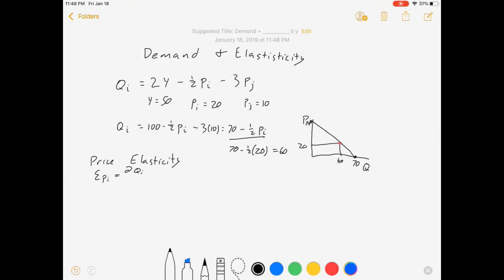Price elasticity, DQI over DPI times PI over QI. Now, don't get freaked out by this notation. There's no calculus in this class. I'm just going to tell you, anytime you see that on a straight line, all you have to do is just take the slope. So the slope of our demand function, DQI means we're taking the slope of Q. DPI means we're taking it with respect to PI. Well, the slope of Q with respect to PI is minus a half. So this is minus one half times PI, which is 20 over QI, which is 60 equals minus one over six, which is inelastic.